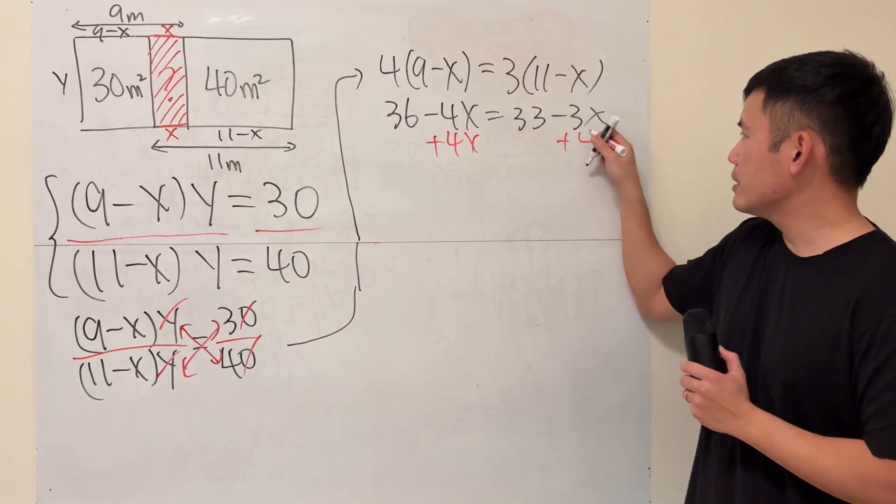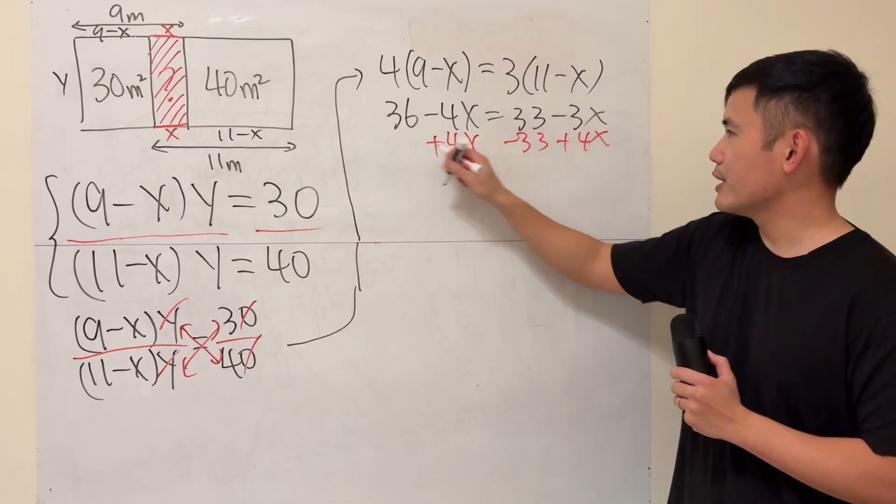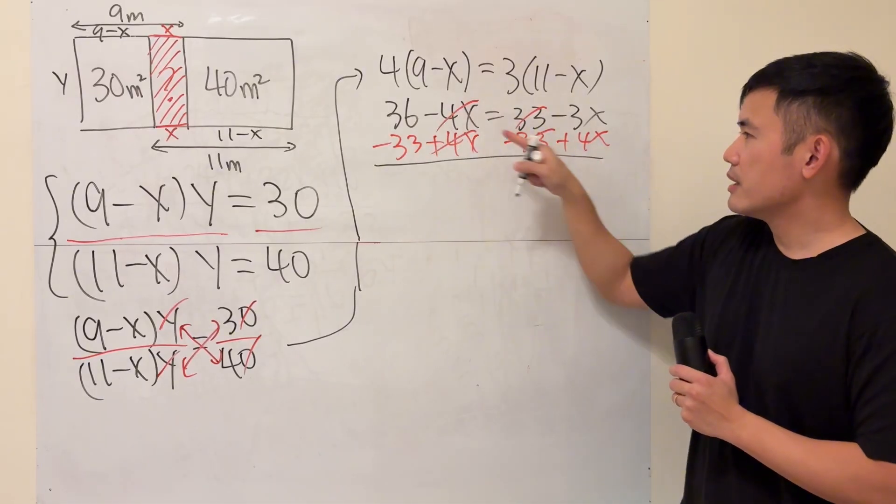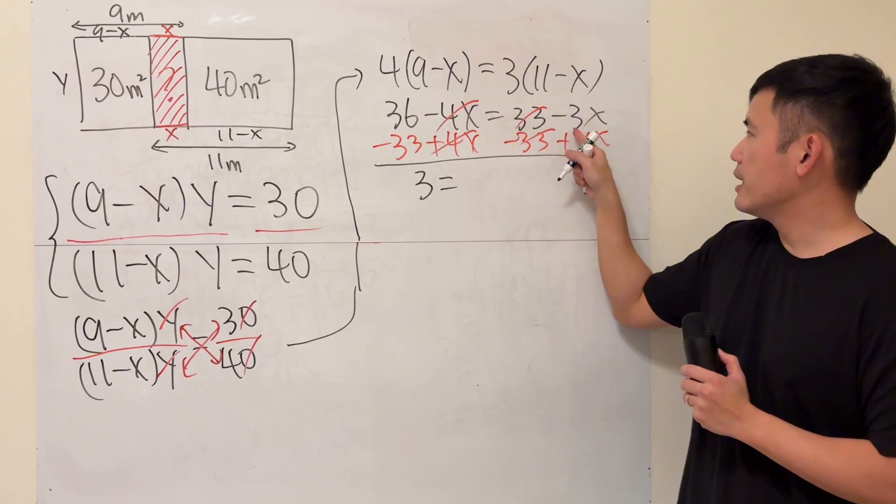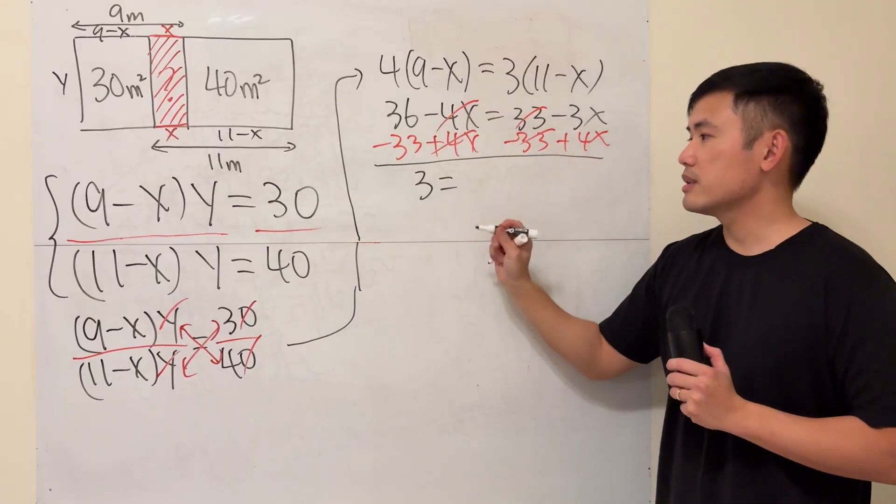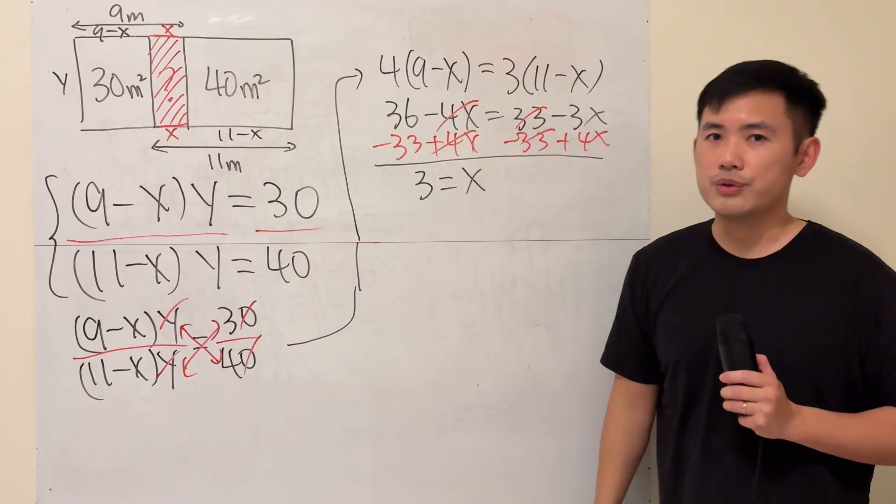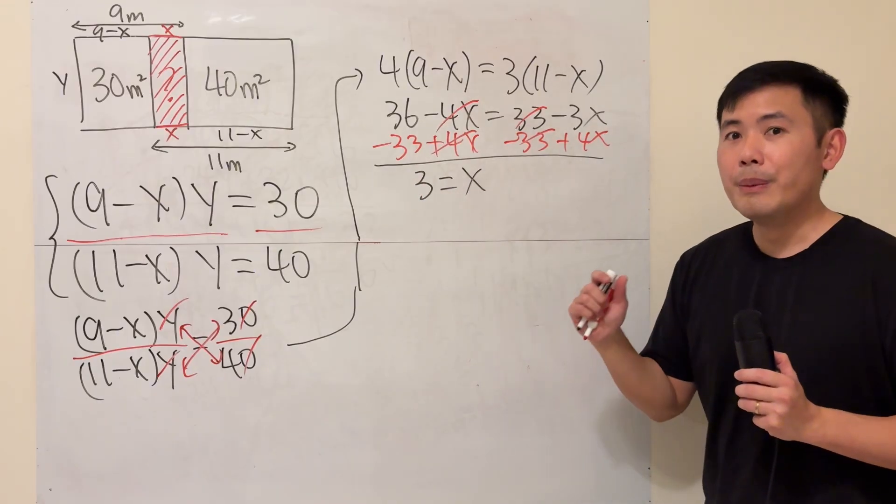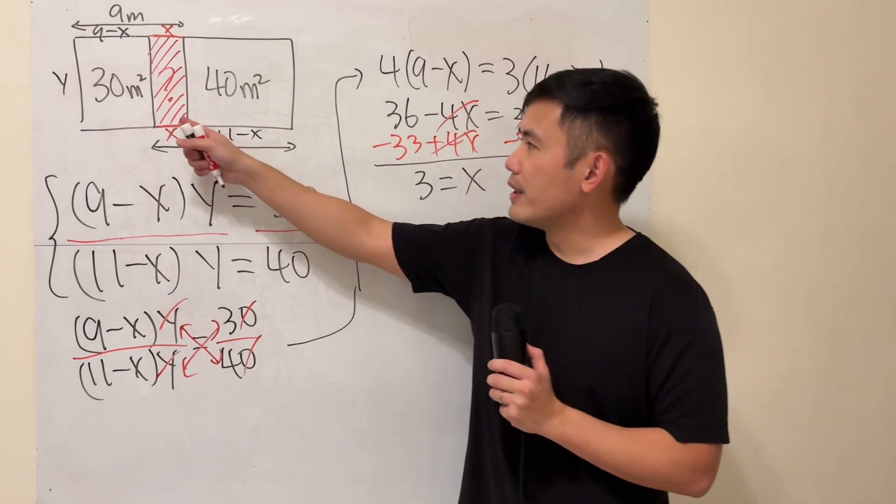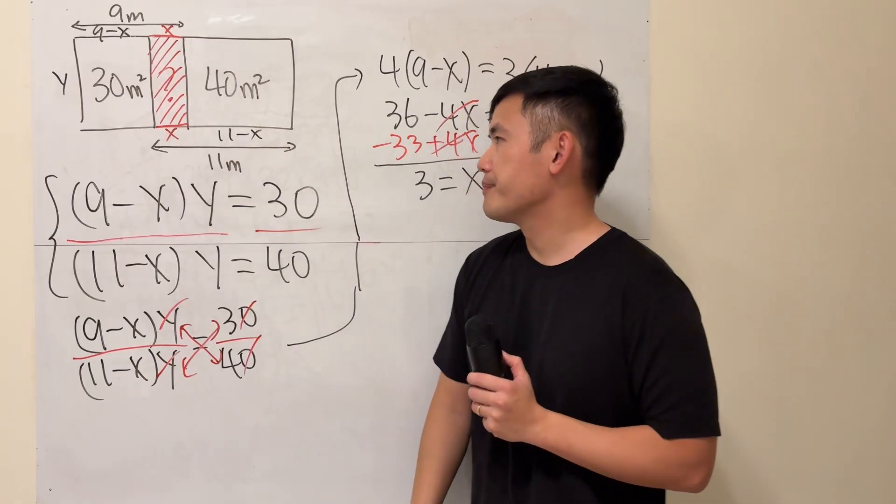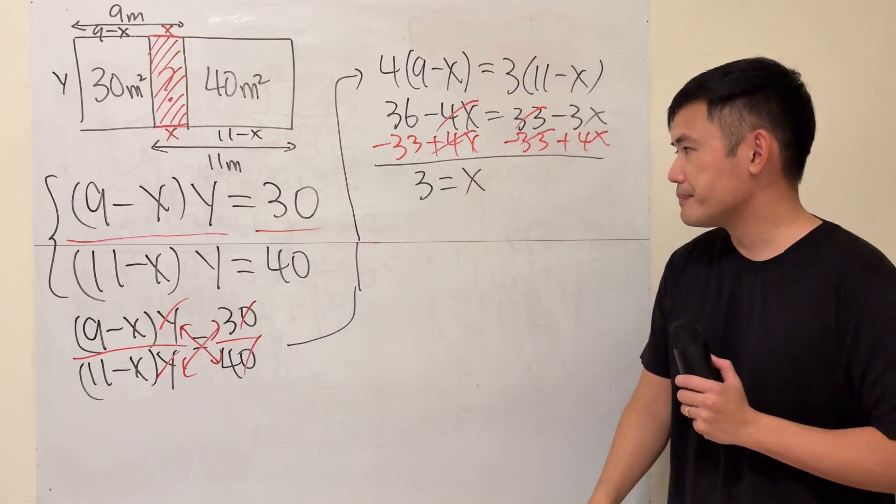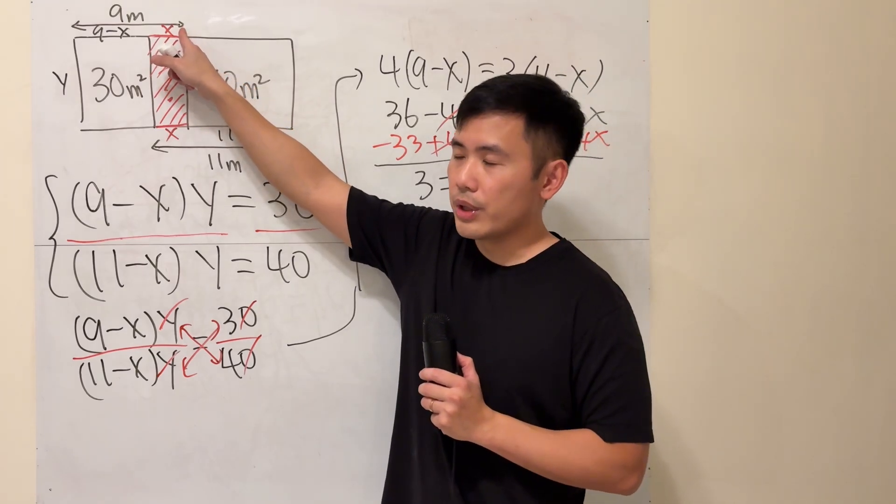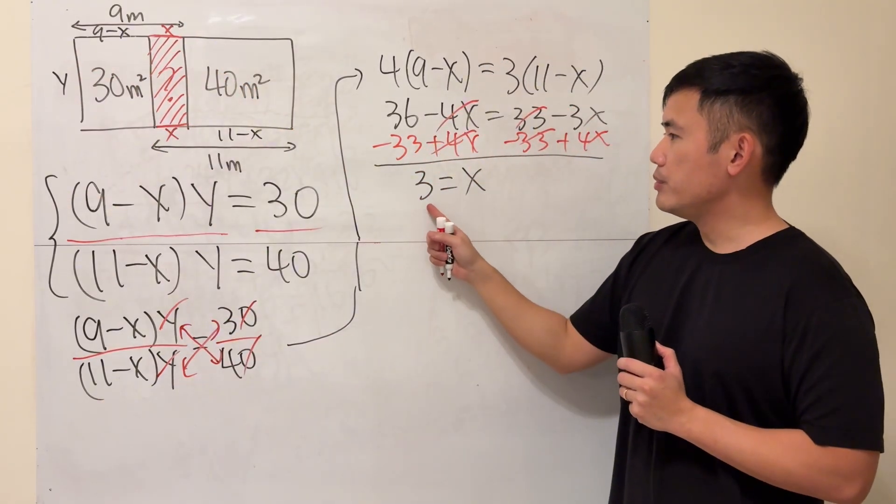Add 4x to both sides, then subtract 33 from both sides. Very nice—that's 3. And -3x + 4x gives us x, so x equals 3. But not too fast! Don't just box this as the answer, because our goal is to find this area, right? So how do we find the area? Well, we have x, which is 3 meters. Now we need y. Plug in 3